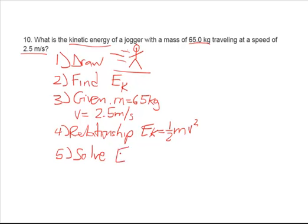Okay, solve. So E sub K is equal to one-half our mass, 65 kilograms, times 2.5 meters per second squared. An important part here, remember, Aunt Sally wants to make sure that we square this value first before we do all the other work. Let's go ahead and calculate that.